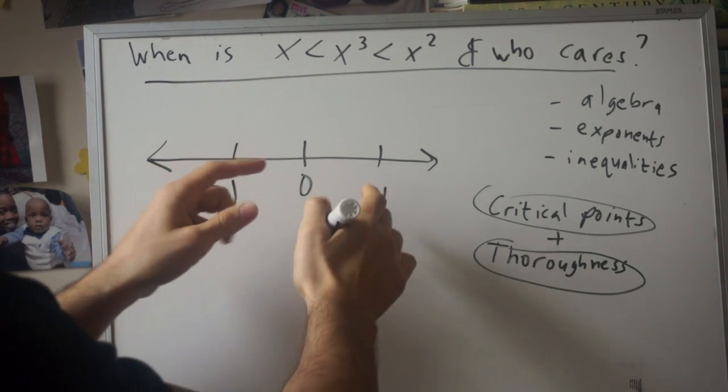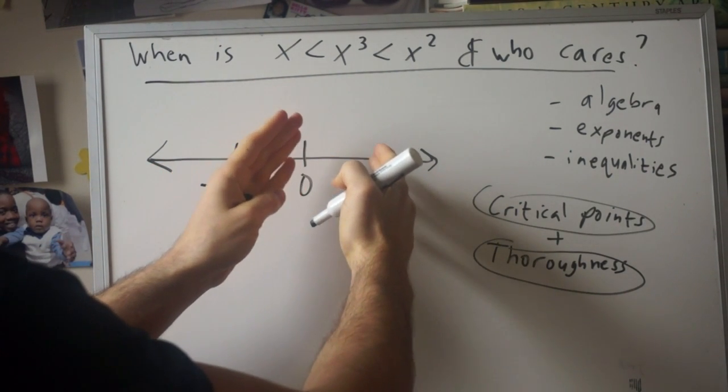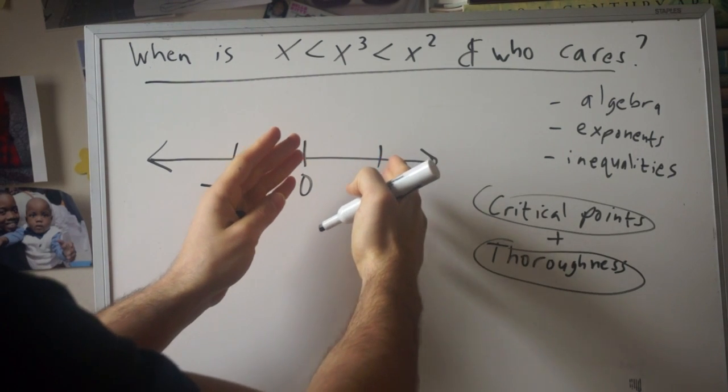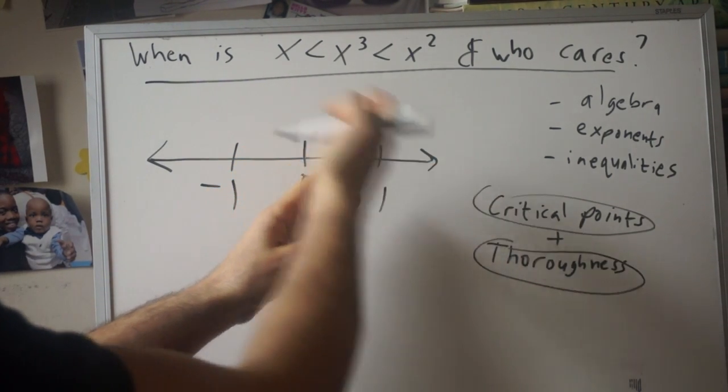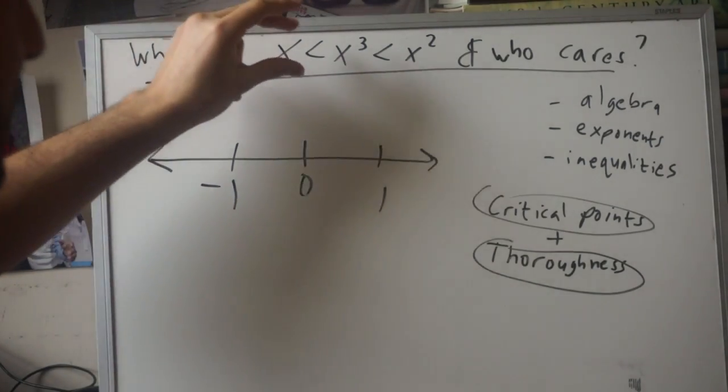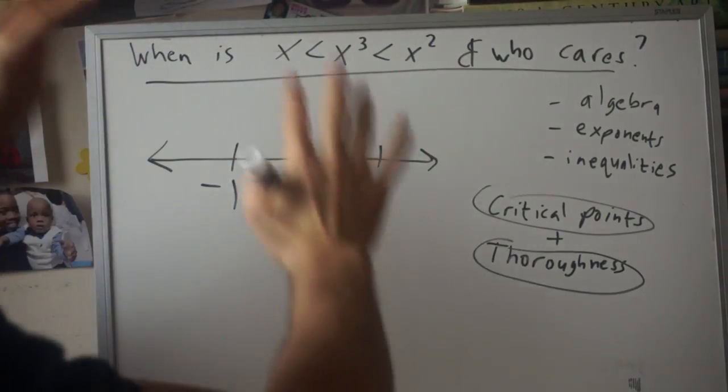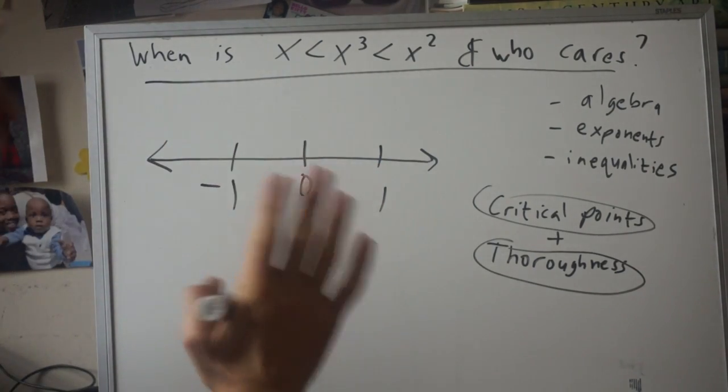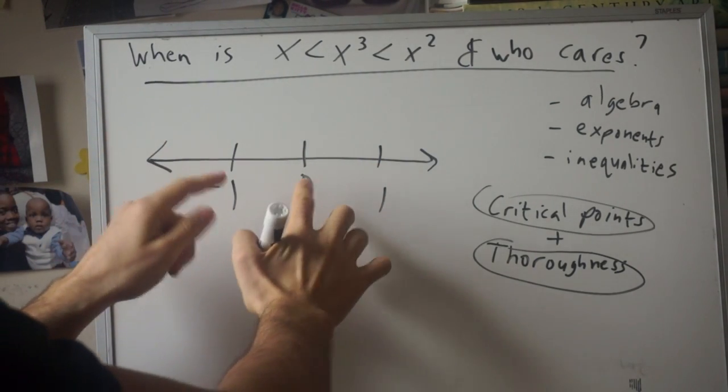Because fractions behave kind of weird, and so we have fractions, things that are between zero and one, then we have numbers above one, but we also have the negative version of that. So that's why I picked these critical points. So when approaching this, do not just poke around.